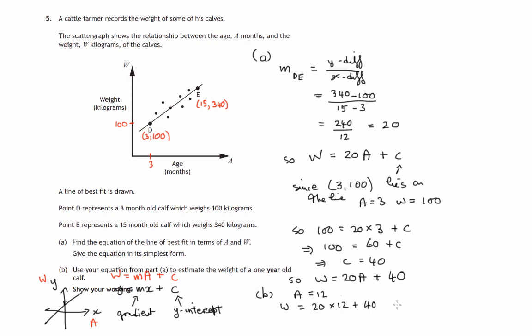So we get 20 times 12 plus 40. That's 240 plus 40, just 280. So we'd say a one-year-old calf, estimate, 280 kilograms.